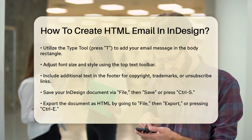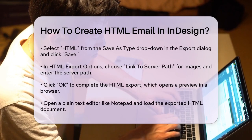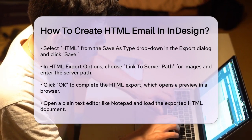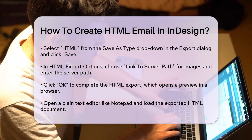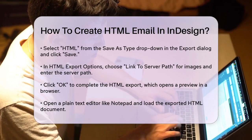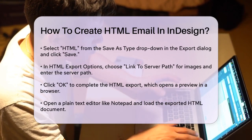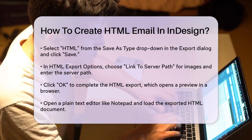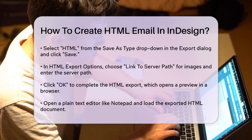In the Export dialog, select HTML from the Save As Type drop-down menu and click Save. This will open the HTML Export Options dialog. In the HTML Export Options, go to the Image section and select Link to Server Path from the Copy Images drop-down menu. Enter the server path where your images are stored and make sure this path matches where your images are located. Click OK to export your document as HTML.